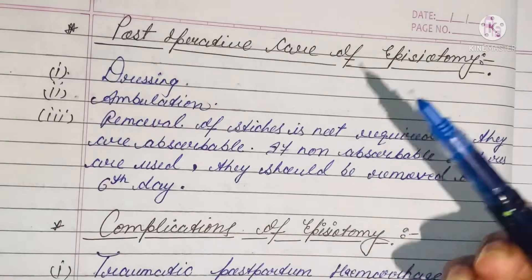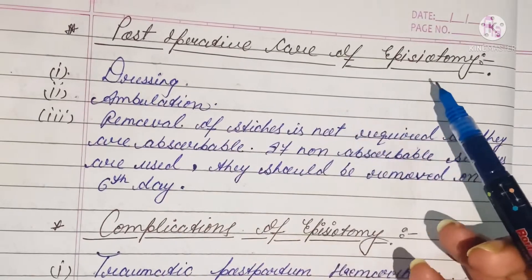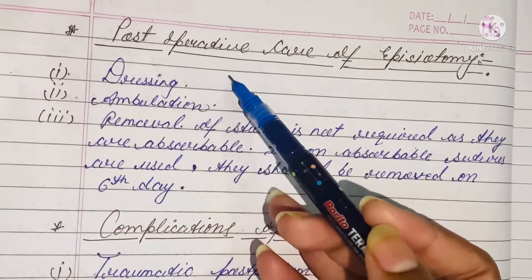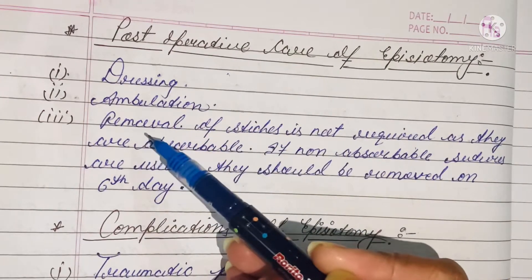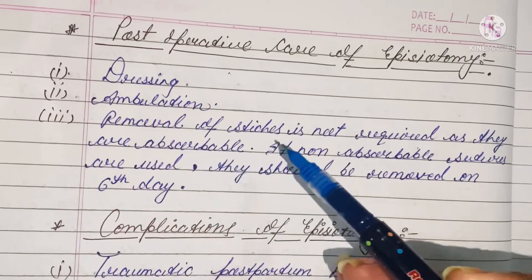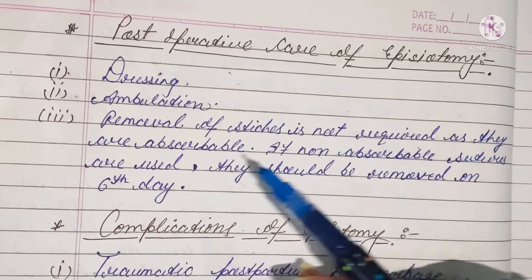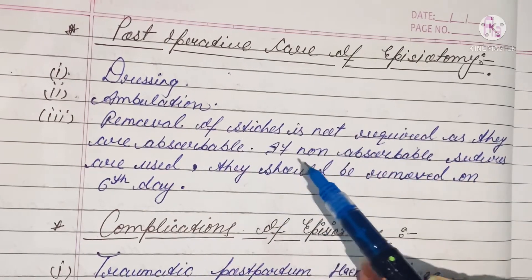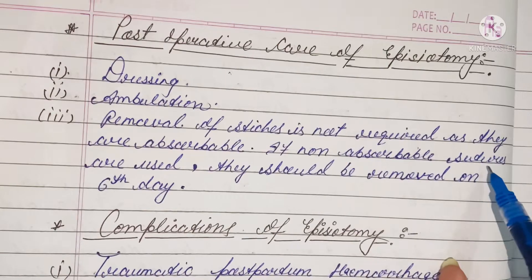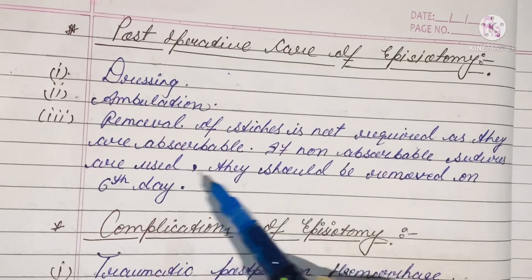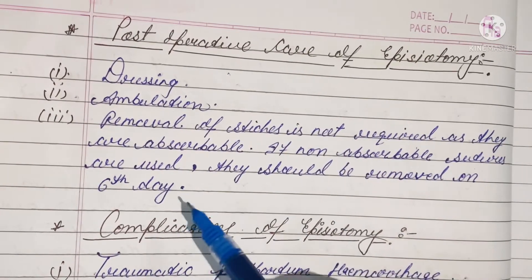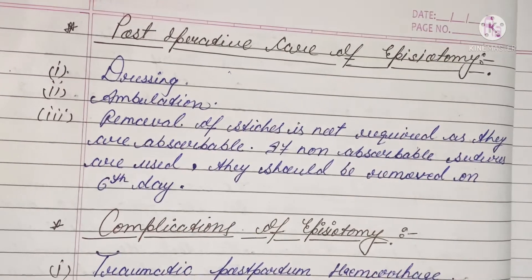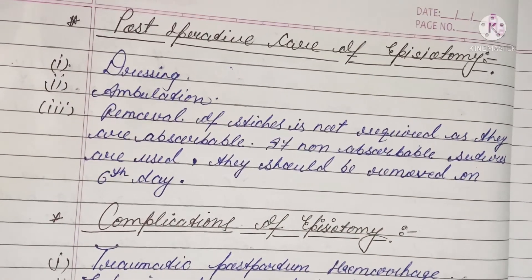Now, the post-operative care of episiotomy: dressing, ambulation, and removal of stitches is not required as they are absorbable. However, if non-absorbable sutures are used, they should be removed on the sixth day.